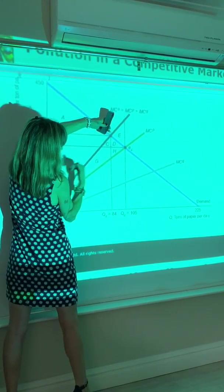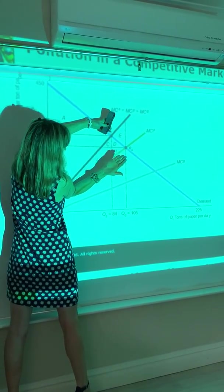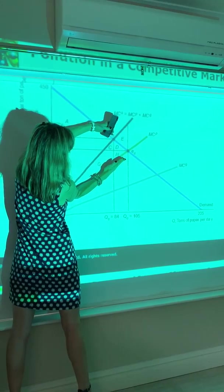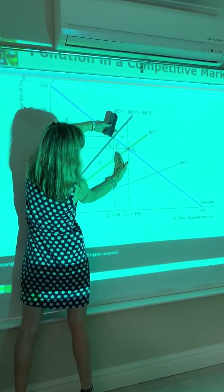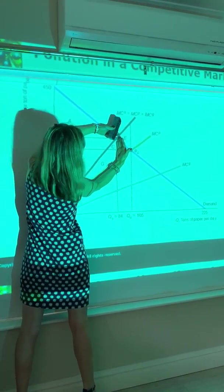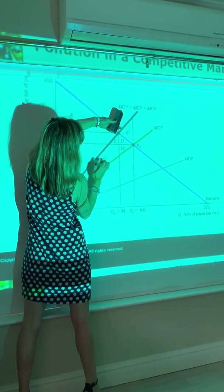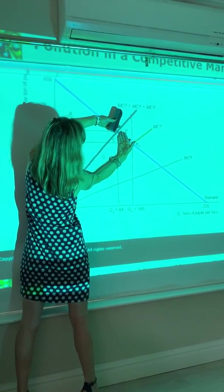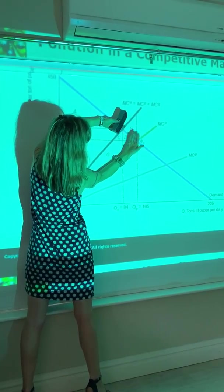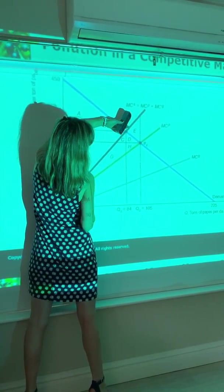Private producer surplus would be the area above your private marginal cost curve, below the price line, up until what's produced. So it would be area B, C, F, G, up until what's produced, the area below the price and above the private marginal cost curve.